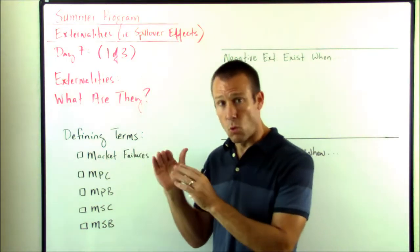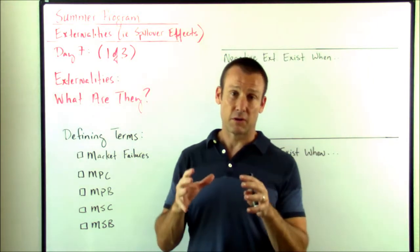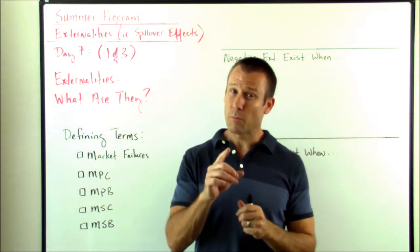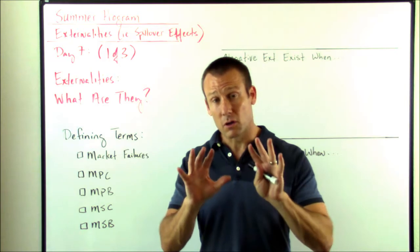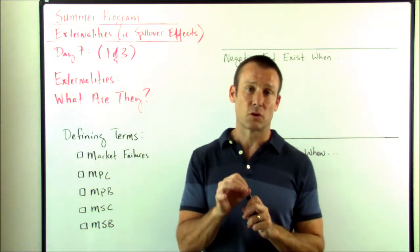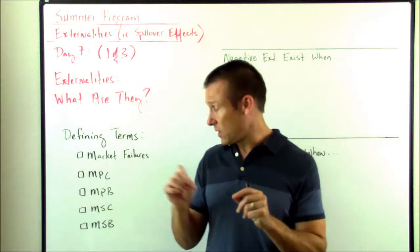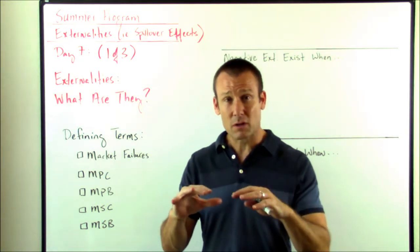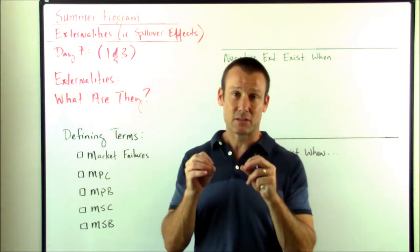Let's go through some more terms. First of all, market failures. Our first market failure that we're formally talking about are externalities. A market failure is a situation where, if the government leaves a market alone, that market will fail to achieve maximum social surplus — it will fail to get us the optimal result.